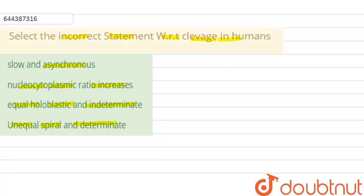We know that cleavage is the mitotic division and if we talk about the humans, so in the humans the division or the cleavage takes place in two types.